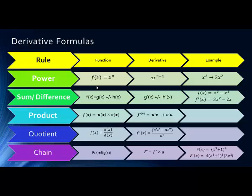The only rule not yet mentioned is the Constant Rule: the derivative of a constant equals zero, and the derivative of a constant times a function equals that constant times the derivative of the function — meaning we can pull the constant out and multiply at the end.